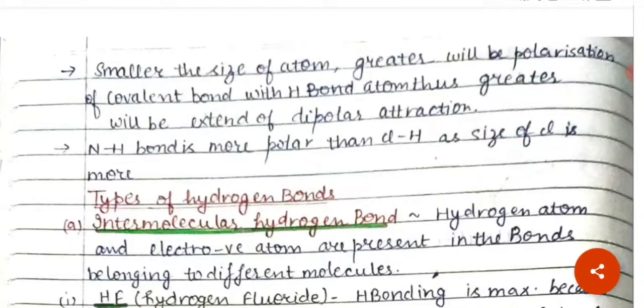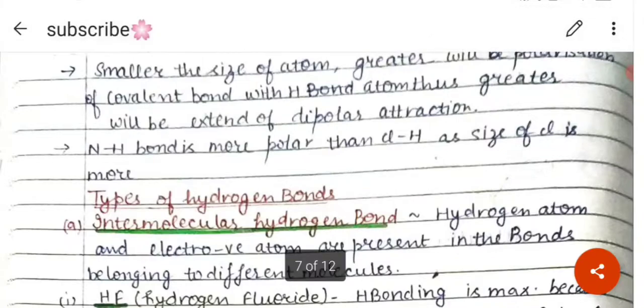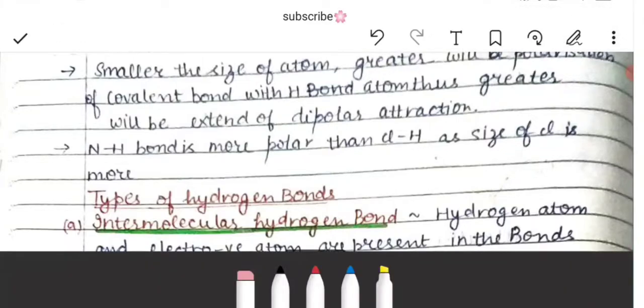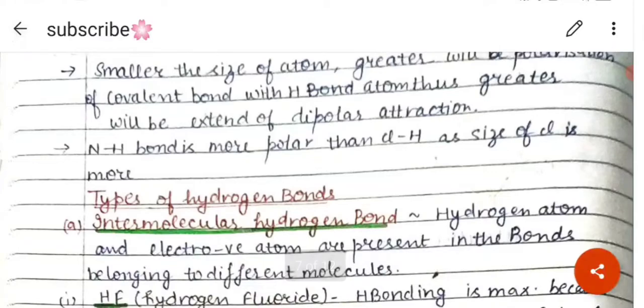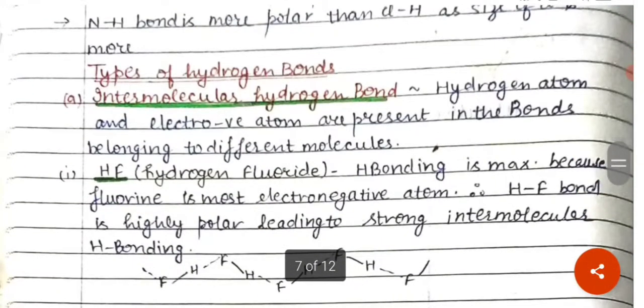The N-H bond is more polar than the Cl-H bond, because the size of chlorine is larger. Therefore, the N-H bond is more polar.